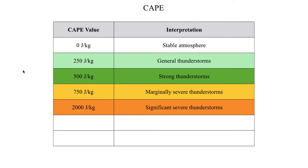Right around 2,000 joules per kilogram is when we say there's enough energy in the atmosphere to support significant updrafts and the potential for more organized thunderstorms — possibly a supercell thunderstorm producing very large hail and very strong winds. A value over 2,000 might also indicate more of a tornado threat. However, having a CAPE value of 2,000 joules per kilogram does not guarantee a significant severe weather threat.